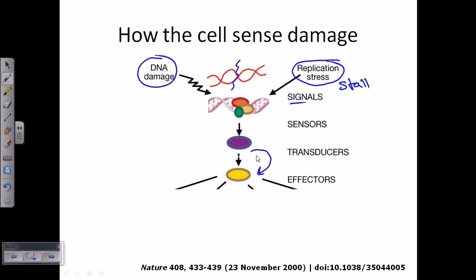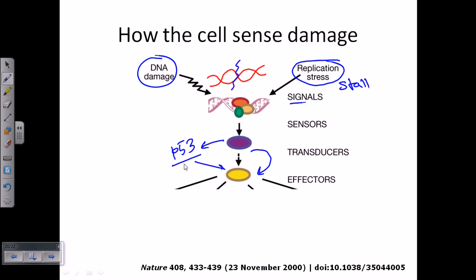There are different examples of sensor, transducer, and effector proteins. For example, p53 is one such effector molecule or effector protein, which will activate other proteins to either repair the DNA or put the cell through apoptosis mechanisms. Sensor proteins sense the scenario and provide that information to p53-like proteins — which are the master guardian proteins of the cell cycle.